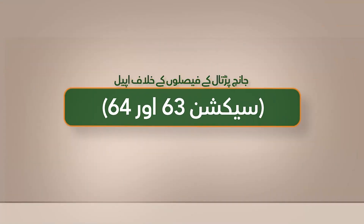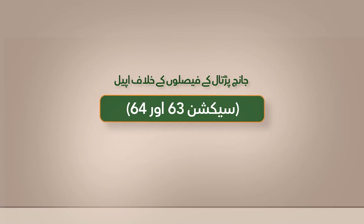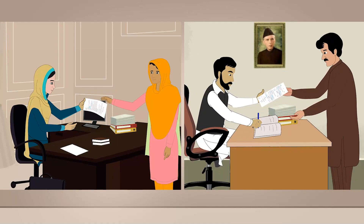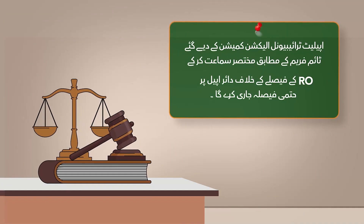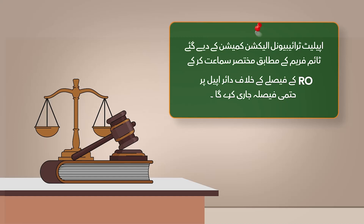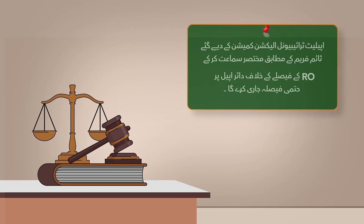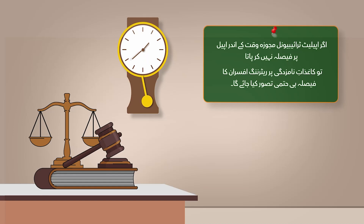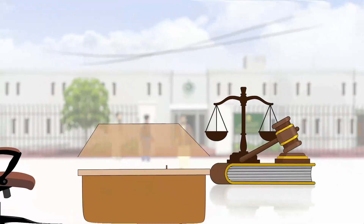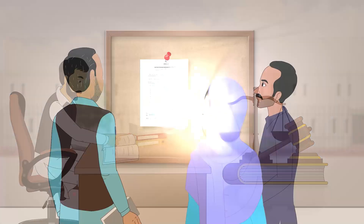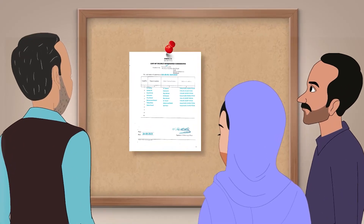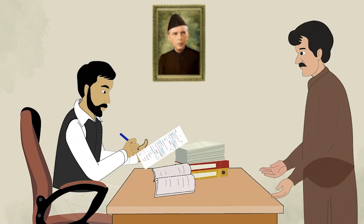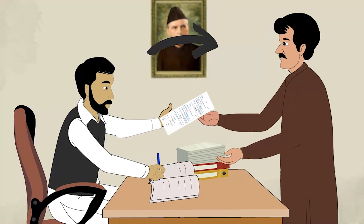Appeal against scrutiny decisions — Sections 63 and 64: The RO's decision regarding the scrutiny of nomination papers can be challenged in an appellate tribunal. The appellate tribunal will conduct a short hearing according to the time frame laid down by the Election Commission and give a final decision on the appeal. If the appellate tribunal fails to pronounce any verdict within the prescribed time, the RO's decision on the nomination papers will be considered final. If required, the Returning Officers will issue a revised list of candidates on Form 32 in light of the appellate tribunal's decision.